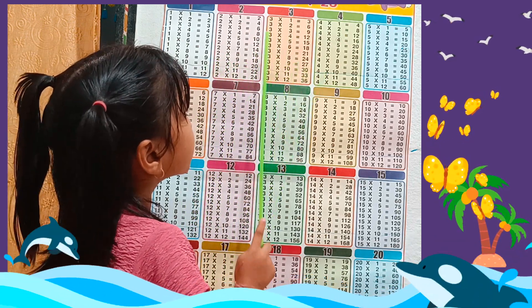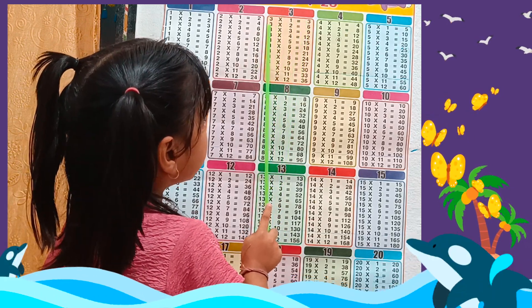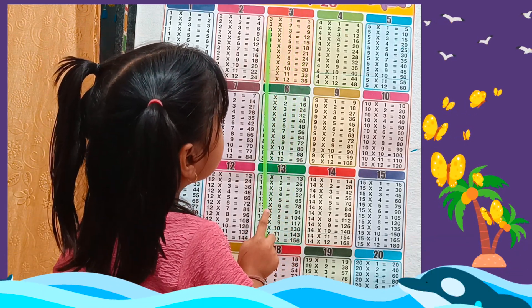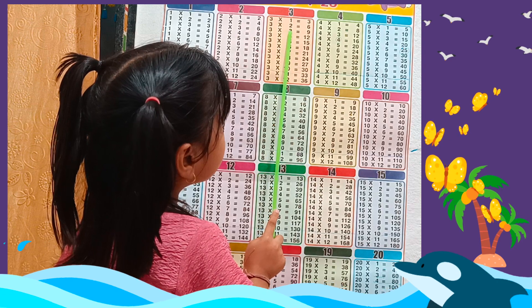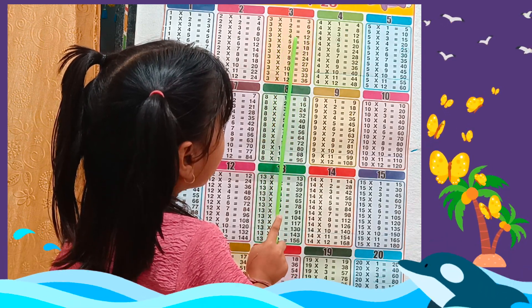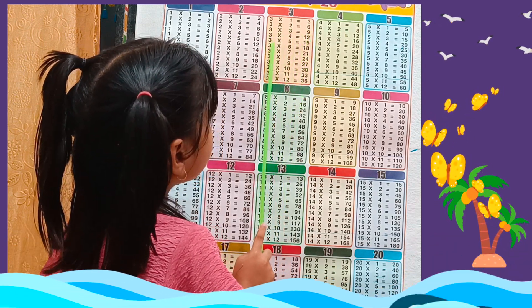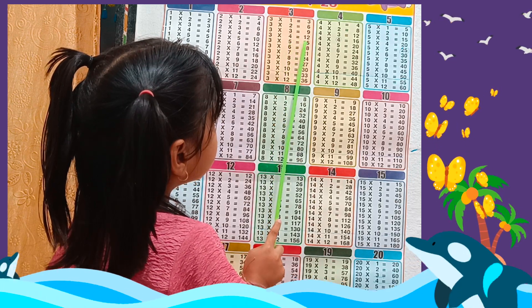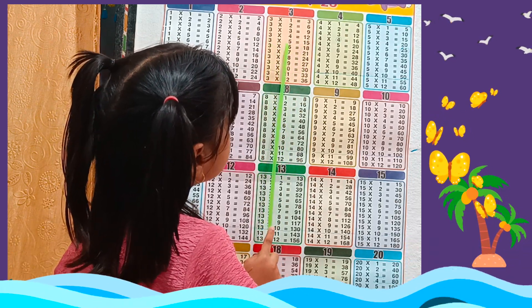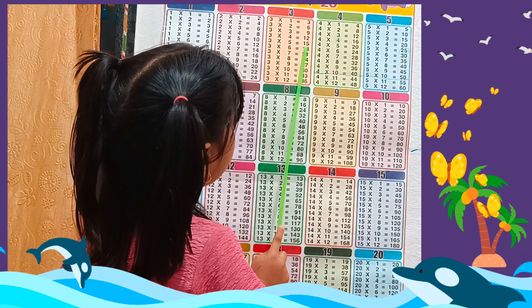3 1s are 3, 3 2s are 6, 3 3s are 9, 3 4s are 12, 3 5s are 15, 3 6s are 18.